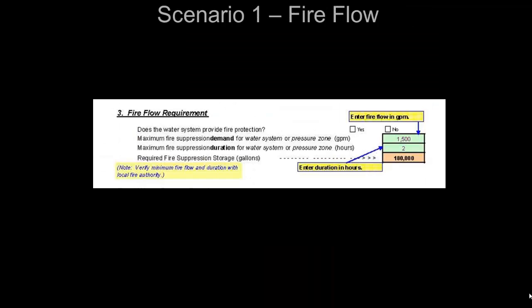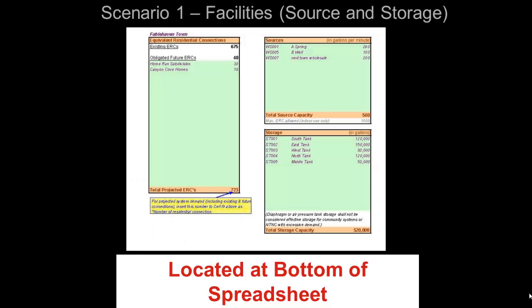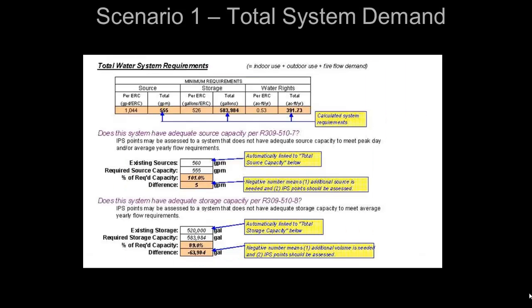Next, we'll input our fire flow demands. By entering 1,500 gallons per minute for 2 hours, the 180,000-gallon volume is automatically calculated. At the bottom of the spreadsheet, we enter the source and storage tank info and the associated flows and volumes — the totals are automatically calculated. For our scenario, this system has a total of 560 gallons per minute available from their sources and 520,000 gallons of total storage. Under the section for equivalent residential connections, you are able to input future obligated connections to verify that the system is able to handle anticipated growth. The total water system requirements are automatically calculated.